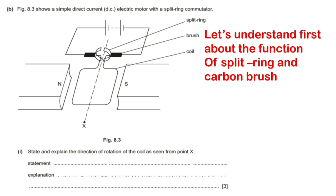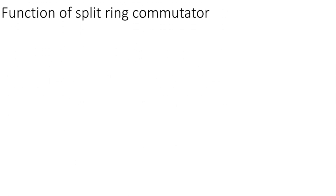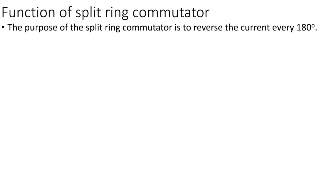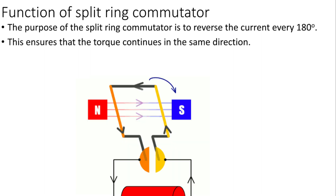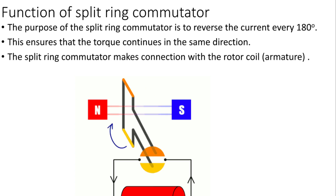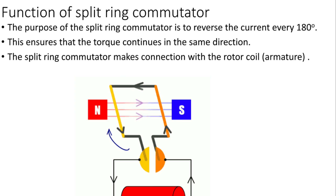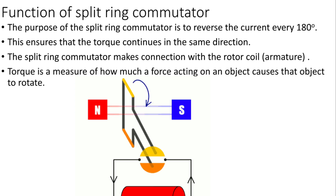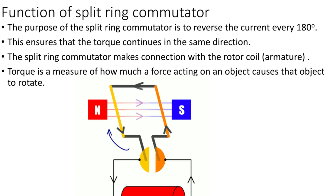The purpose of the split ring commutator is to reverse the current every 180 degrees. This ensures that the torque continues in the same direction. Torque means a couple of forces which act opposite to each other. The split ring commutator makes connection with the rotor coil or armature. Torque is a measure of how much a force acting on an object causes that object to rotate.